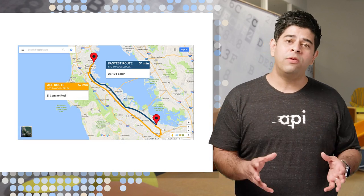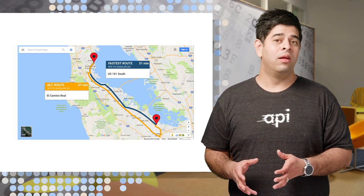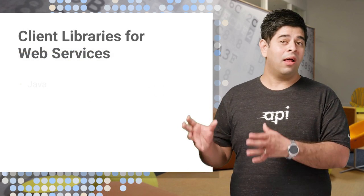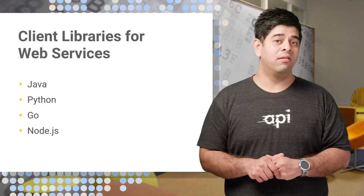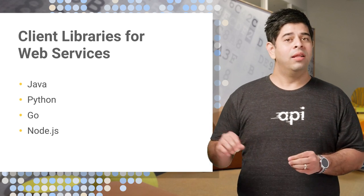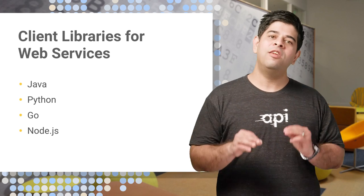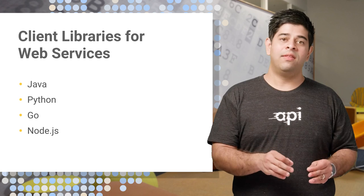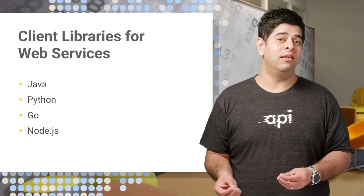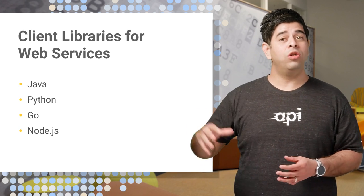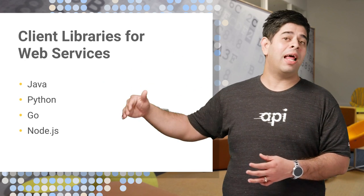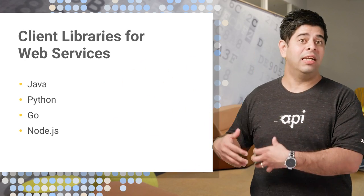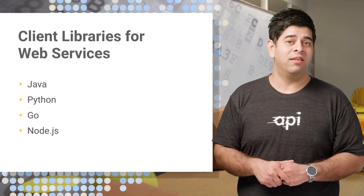So these are a few examples of some of the web services that are available. We also provide libraries for these web services for lots of popular languages. Do note that these libraries are designed to be consumed server-side — they're protected by API keys. So you should consider running this code on your server and then talking to your server with your app, rather than having those libraries run locally in your apps on the mobile device.